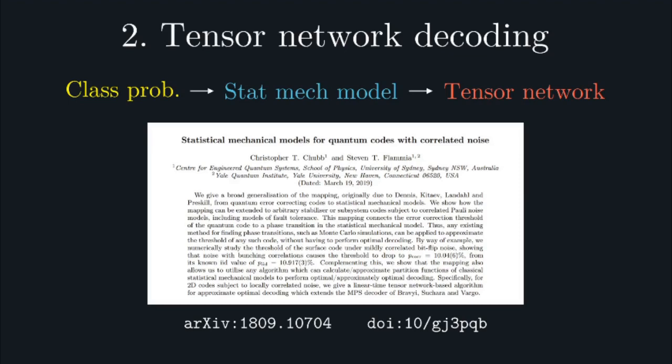This was done by first mapping the codes to classical statistical mechanical models, and then in turn to tensor networks. This approach had the key advantage that it worked generally for any Pauli code, and even allowed us to incorporate more complicated noise models such as those involving correlations.